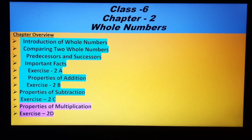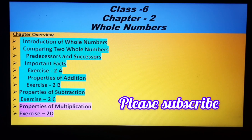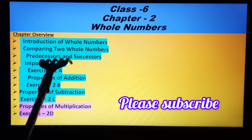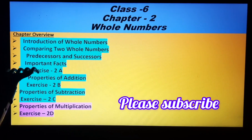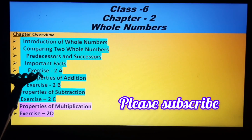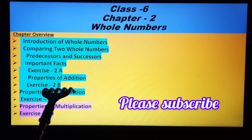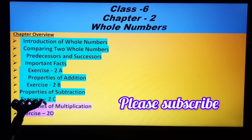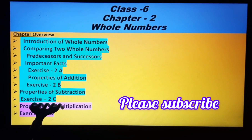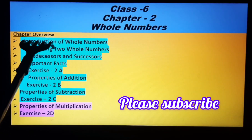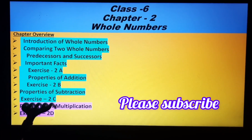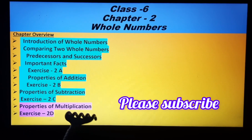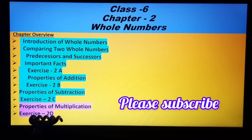So in this chapter we have covered all these points: introduction, comparing two whole numbers, predecessors and successors, important facts, exercise 2A, properties of addition, exercise 2B, properties of subtraction and exercise 2C. We have covered all these points and topics, and today we will cover properties of multiplication and exercise 2D.